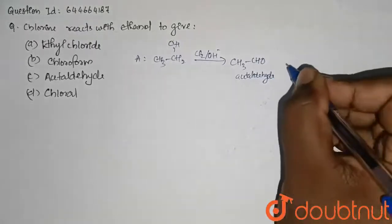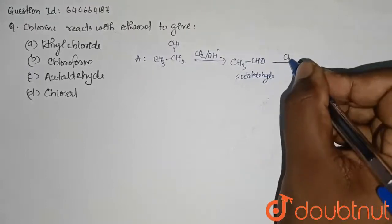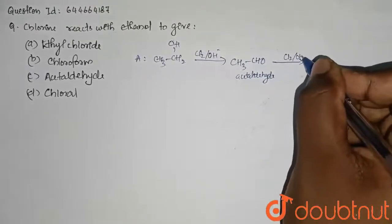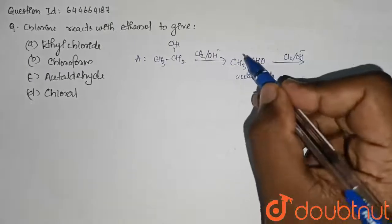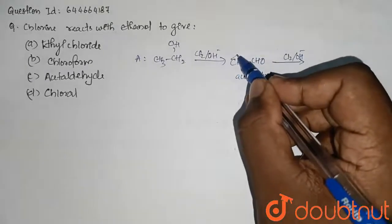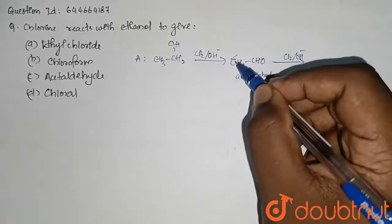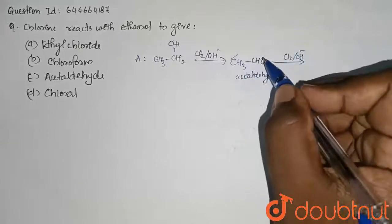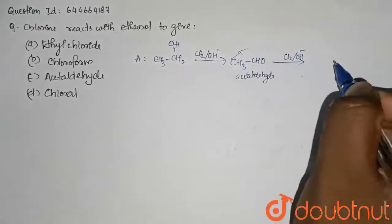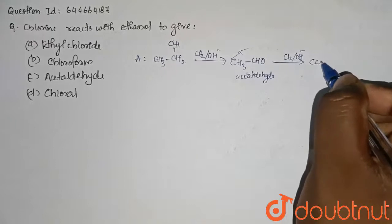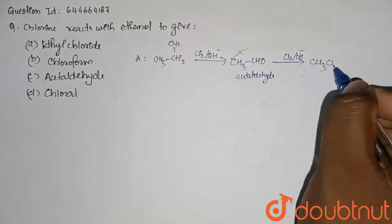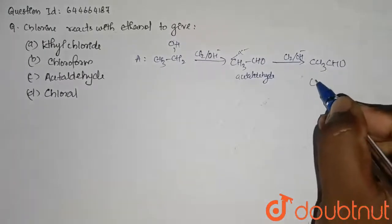So further, when it reacts with Cl2 bar OH minus, what happens is this C is an alpha carbon. So all the hydrogens connected with this alpha carbon will be replaced by chlorines. So it will be producing CCl3CHO and this is called chloral.